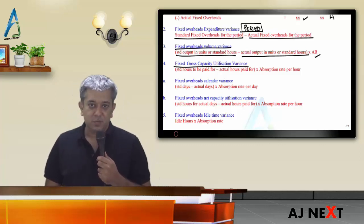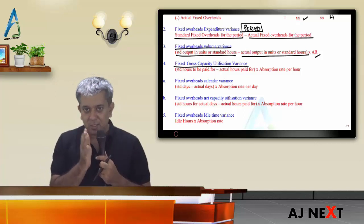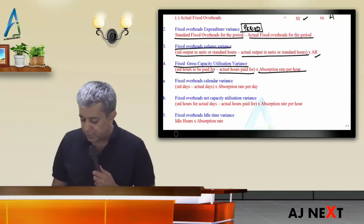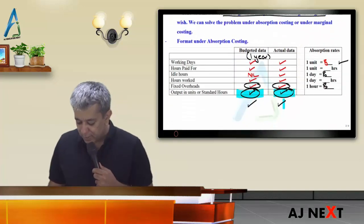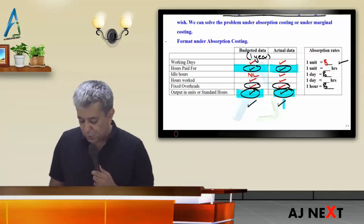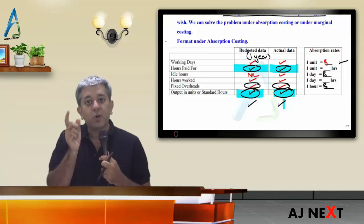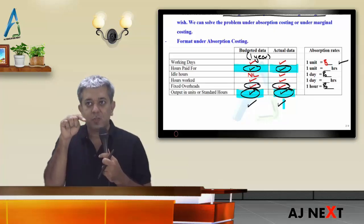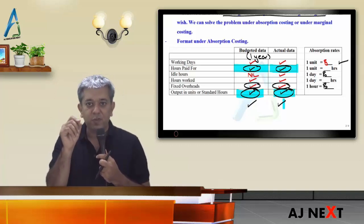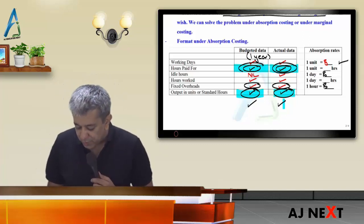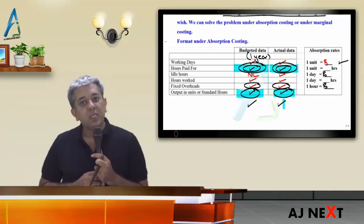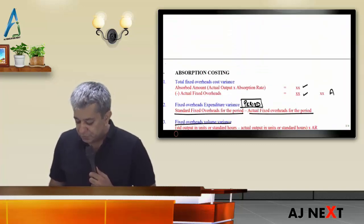Fourth: fixed overheads gross capacity utilization variance. Think of it as: how many hours should have come versus how many hours actually came. Standard hours to be paid for, minus actual hours paid for, multiplied by absorption rate per hour. If actual hours are more than standard, workers came for more hours, produced more units, fixed overheads per unit will fall — variance is favorable. If actual hours are less, variance is adverse.